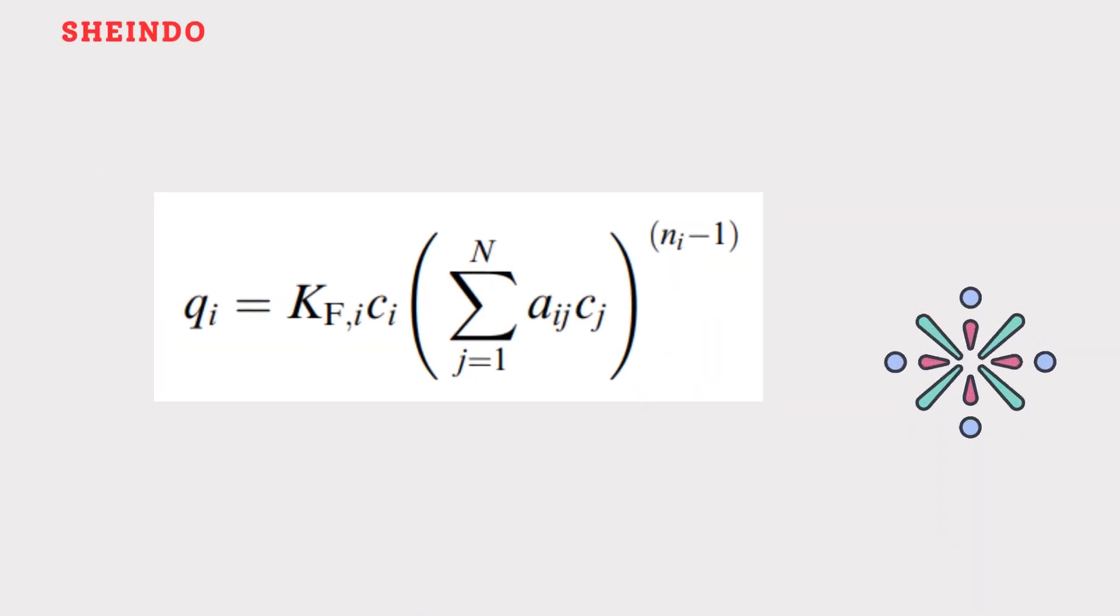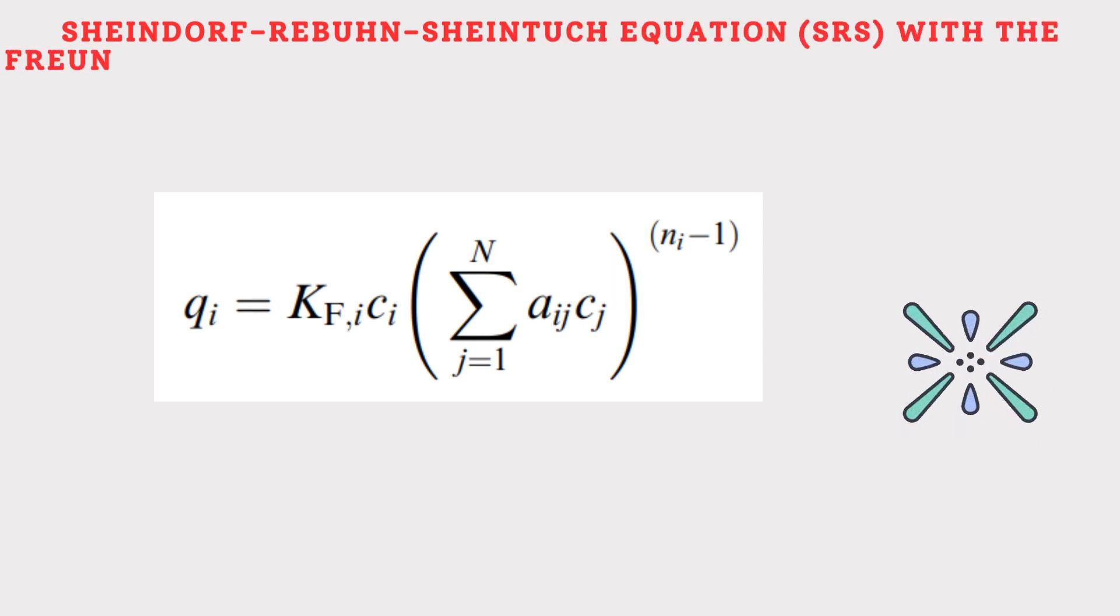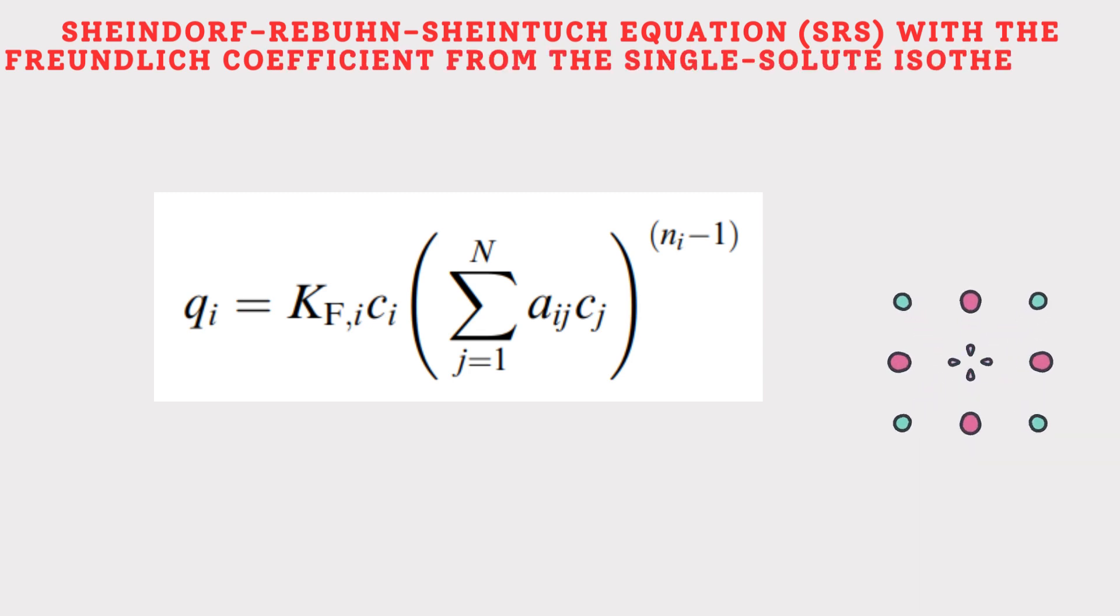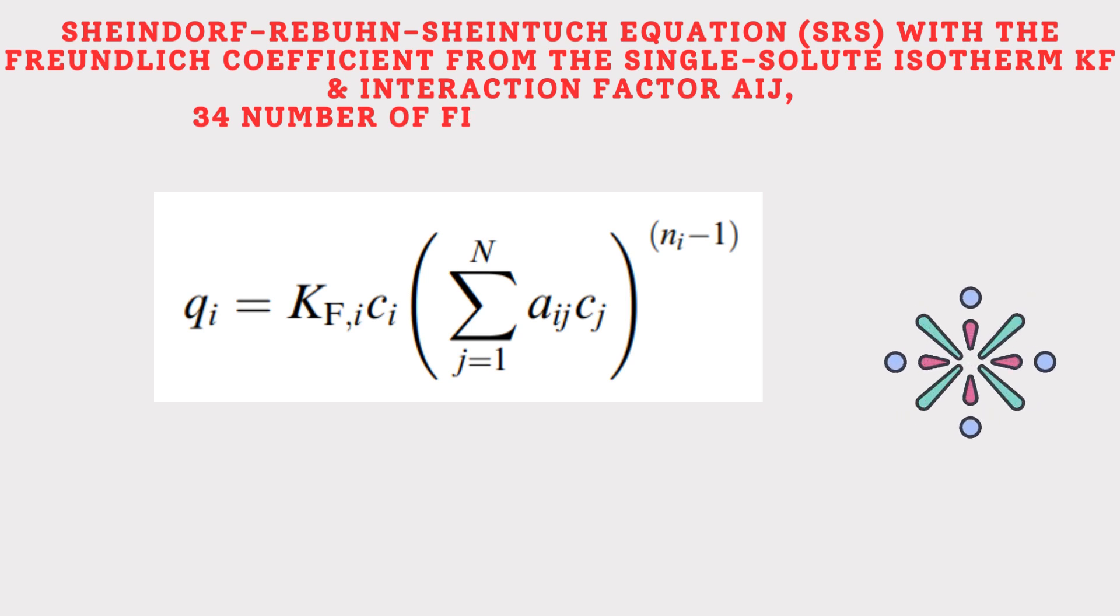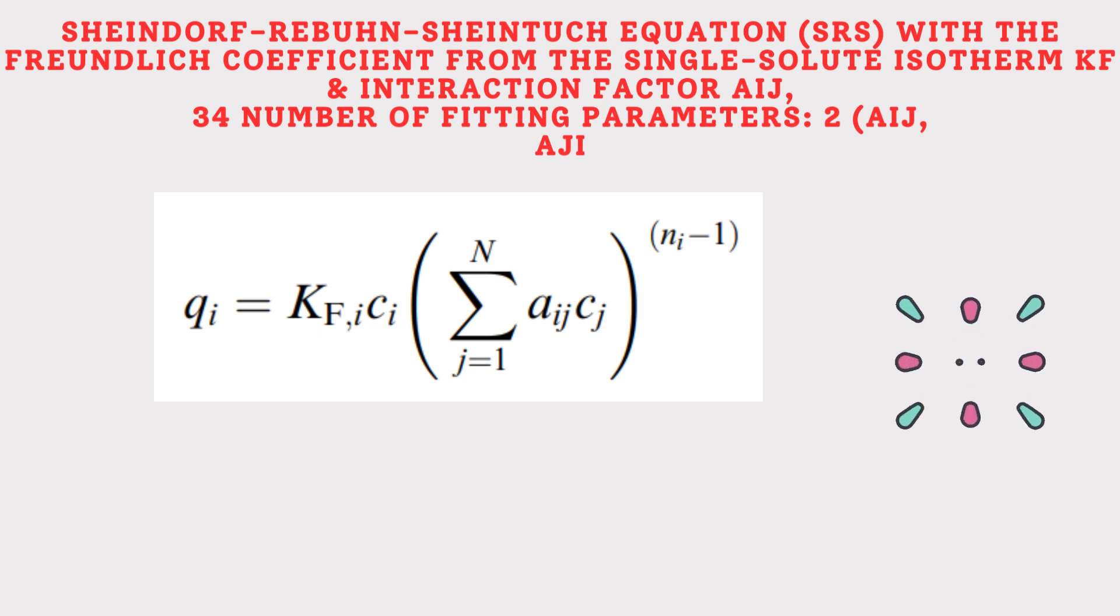Then comes Seidorf-Ribbon-Seind touch equation SRS with the Freundlich coefficient from the single solute isotherm and interaction factor. Number of fitting parameters 2. The equation can be written as q equal to kf times ci times summation over aij times cij to the power n minus 1.